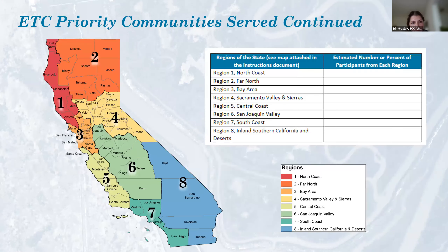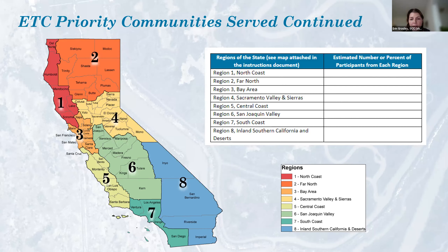In the lower part of the table, fill in the estimated number of participants from each California region. There is a colored map in the application instructions showing how the different regions are defined for Explore the Coast projects. Estimate the percentage of participants from each region that you are bringing to the coast.